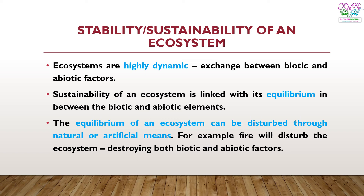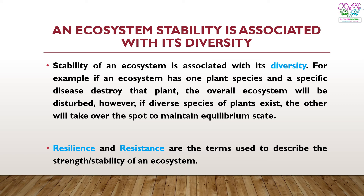The equilibrium of an ecosystem can be disturbed through natural or artificial means. For example, fire will disturb the ecosystem, destroying both biotic and abiotic factors. The stability of an ecosystem is also associated with its diversity in both biotic and abiotic factors. For example, if an ecosystem has only one plant species and a specific disease destroys that plant, the overall ecosystem will be disturbed. However, if diverse species of plants exist, others will take over to maintain the equilibrium state.